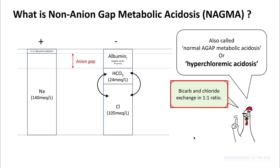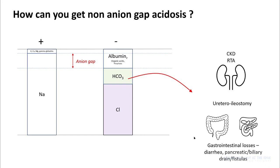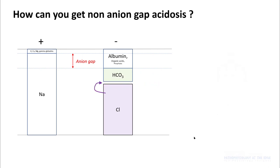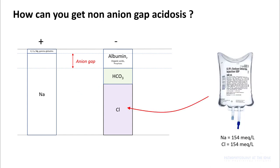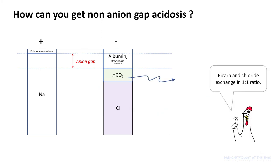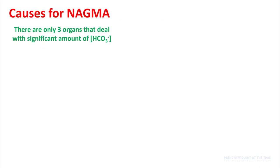There can be only two reasons for non-anion gap acidosis. First is loss of bicarb, and when you lose bicarb, chloride will come and take its place — so if you lose one molecule of bicarb, you generate one molecule of chloride. The other reason is getting too much chloride, in which case you will lose bicarb by the same amount in a one-to-one ratio.